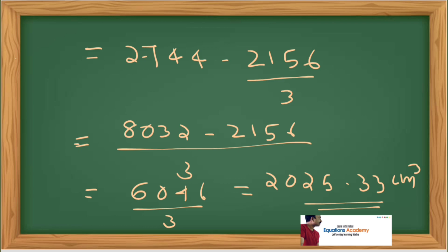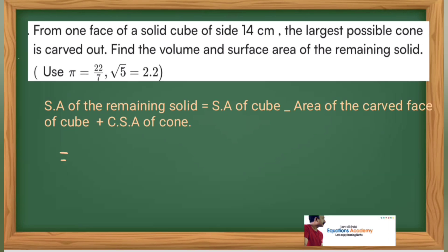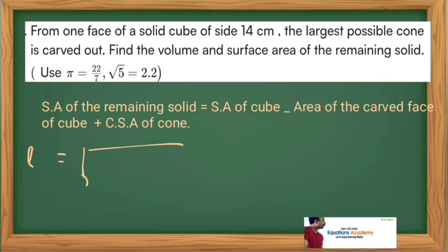Now we need to find surface area of the remaining solid. Surface area of the remaining solid equals total surface area of cube, minus the circular base area where the cone was carved out, plus the curved surface area (CSA) of the cone. CSA of cone is pi r l, but the slant height is not given, so we need to find it.